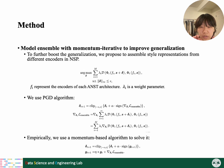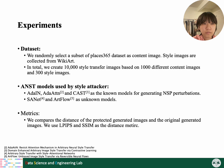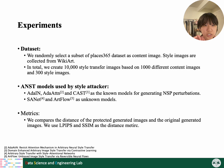With this method, we conduct experiments to test the performance. For the dataset, we randomly select a subset of the Places365 dataset as content images, and style images are collected from WikiArt. In total, we create 10,000 style transfer images based on 1,000 different content images and 300 style images. We use three representative ANST models as known models in the NSP perturbation generation process, and two different ANST models as unknown models used only in the test phase. For metrics, we compare the distance of the protected generated image and the original images using LPIPS and SSIM as distance metrics.